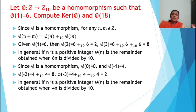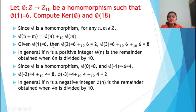Next problem: let phi from Z to Z10 be a homomorphism such that phi(1) = 6. Compute the kernel of phi and phi(18). Given that phi is a homomorphism, for any n, m element of Z, with addition as the operation of Z and addition modulo 10 as the operation of Z10, we have phi(n + m) = phi(n) +₁₀ phi(m). Given phi(1) = 6, then phi(2) = phi(1+1) = 6 +₁₀ 6 = 12 mod 10 = 2.